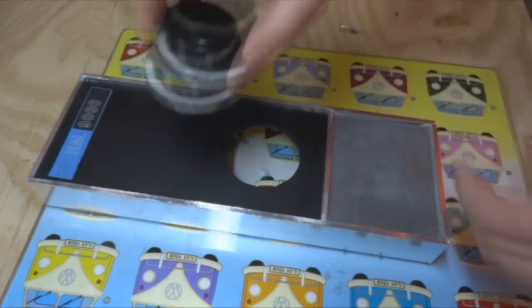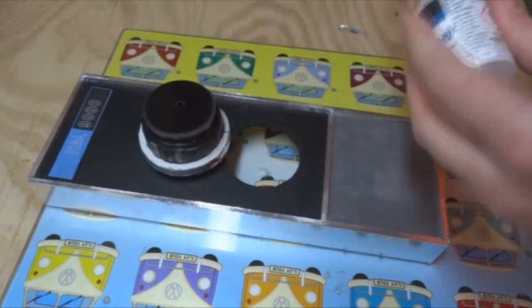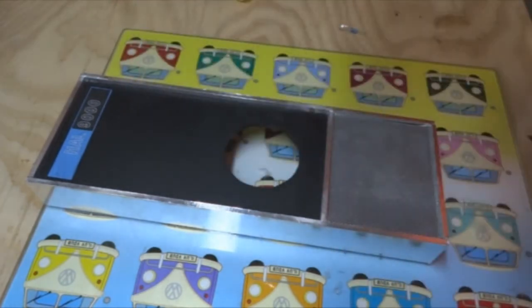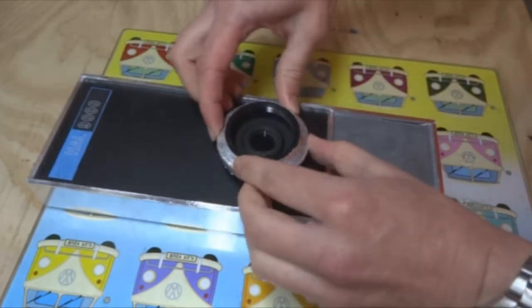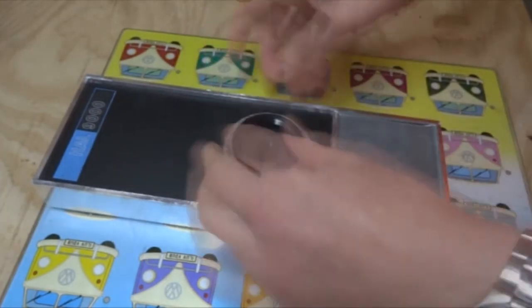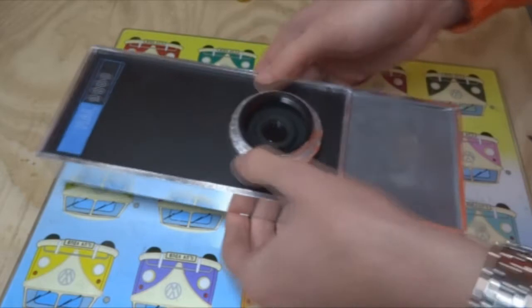Then the grille is just push-fitted. The lens here, I'm just going to run, again, just a bead of super glue around the edge, and drop that in, trying not to get super glue on the fingers. That's in, and that is not going to go anywhere.